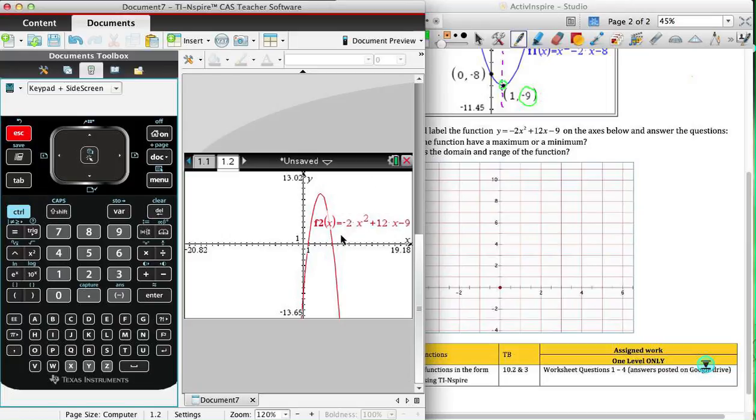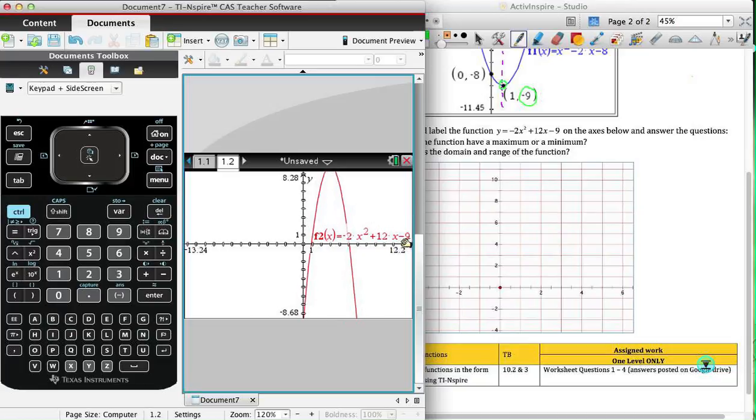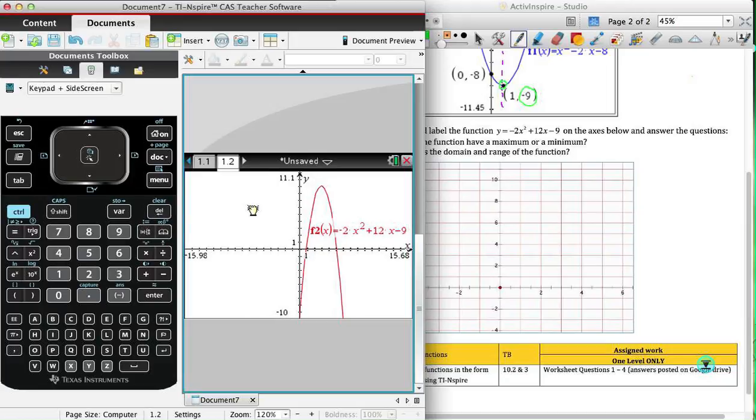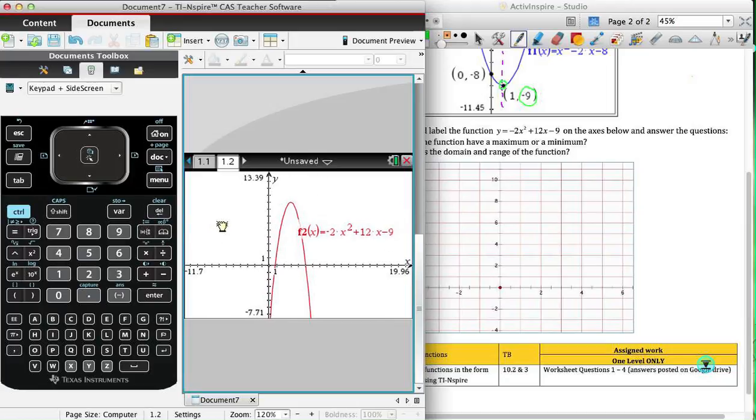That should give me enough of a view. It might be a little bit congested, so we can modify that as well by just grabbing the x-axis. You can also slide it down by grabbing in the area, although that's a little bit harder to do with the cursor pad.